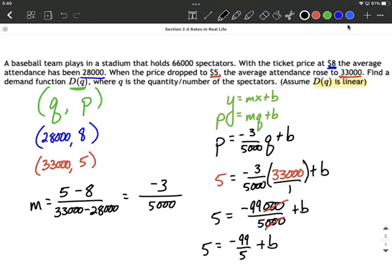Well, to get B by itself, I want to move that negative 99 fifths to the other side. So I'm going to do my work over to the side here. I'm going to say that's 5 plus 99 fifths is going to equal our B. And to get my final answer here, it's going to be important we get the common denominator to add fractions.